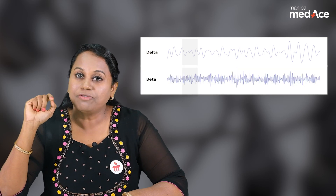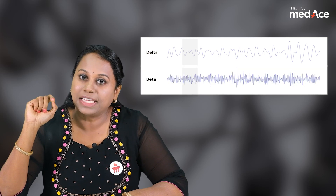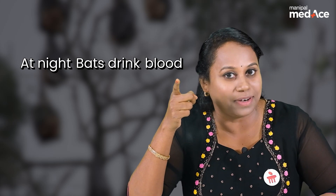B for beta waves obtained during REM sleep. This is how easily we correlate the sleep waves in different stages of sleep. Remember: at night bats drink blood.